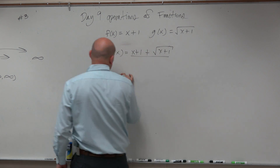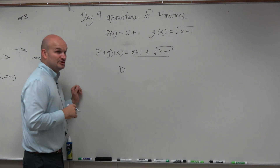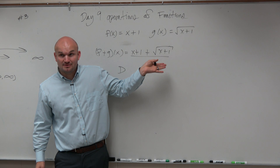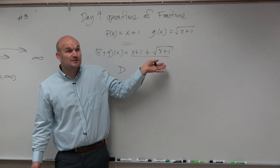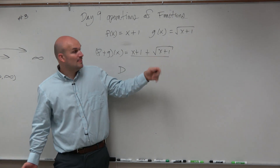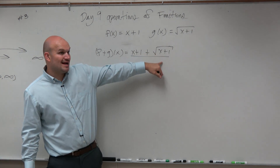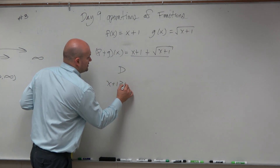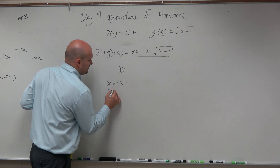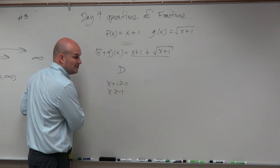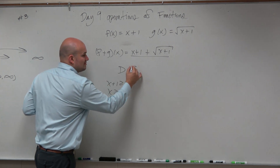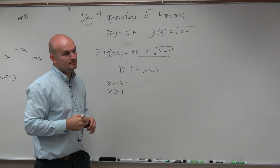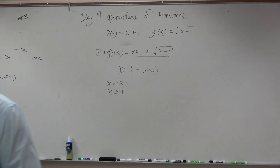Now you do need to find the domain. Do you have any fractions here? No. So we don't need to worry about making the denominator 0. But we do have a radical, so we know that x plus 1 has to be greater than or equal to 0. So x has to be greater than or equal to negative 1, and the domain is negative 1 to infinity. Done.